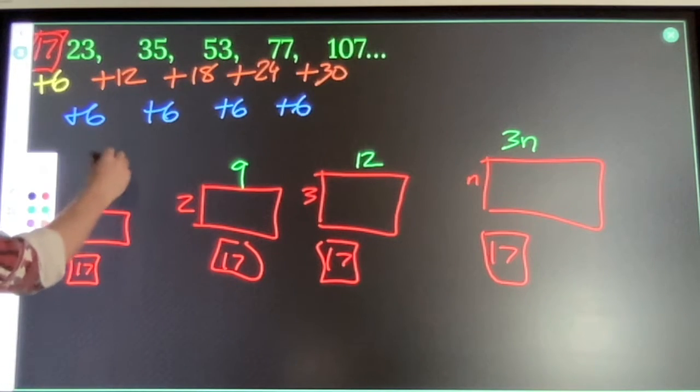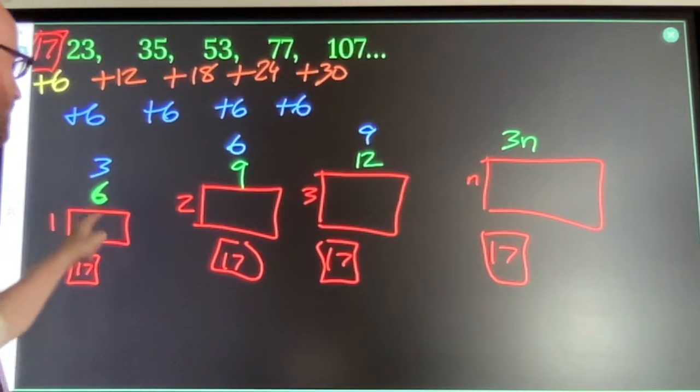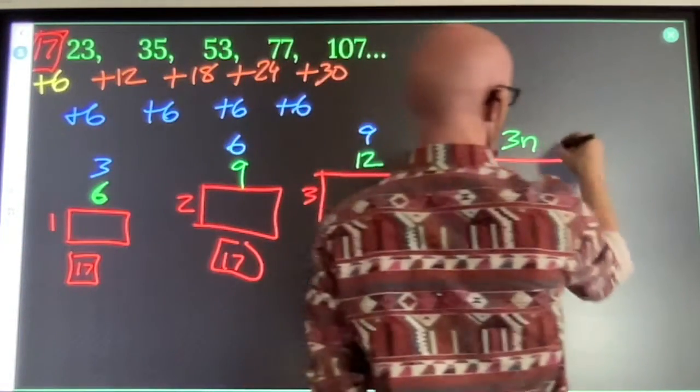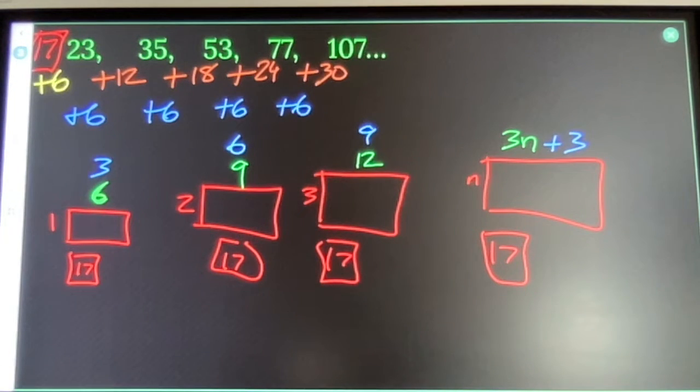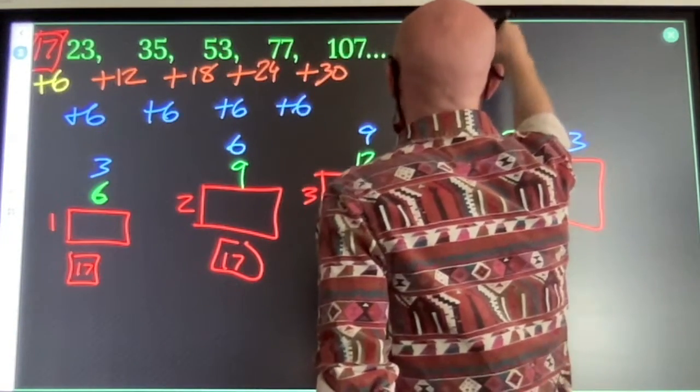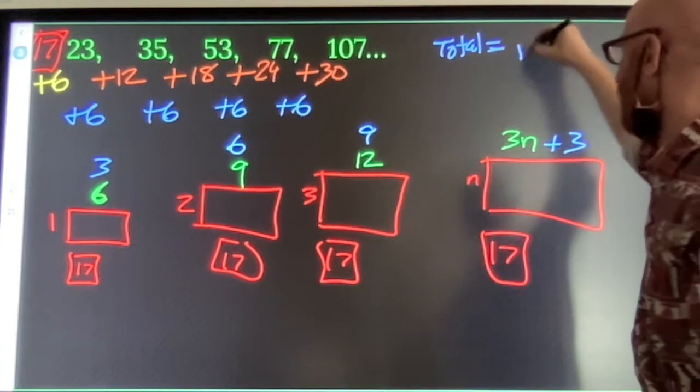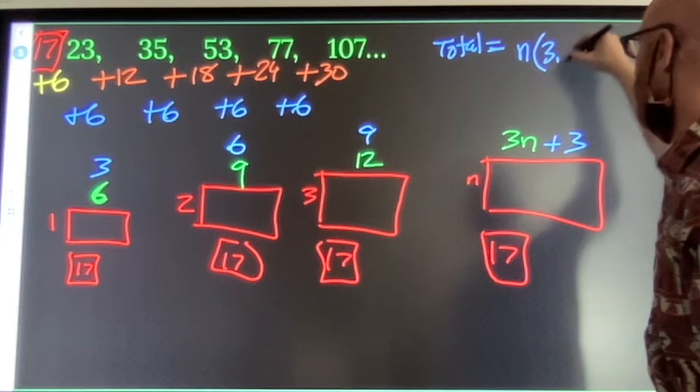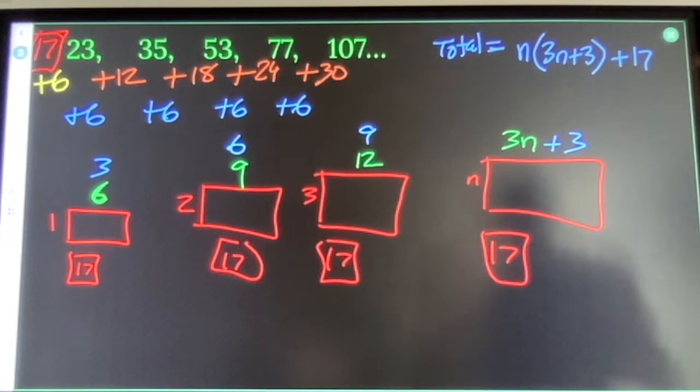That means the top of my rectangle is 3n with an adjustment. If I write out 3 times 1, 3 times 2, 3 times 3. We've got to shift up 3. 3 times n plus 3. Those are my formula blocks. Total number of squares in this set is going to be n times 3n plus 3 plus the 17 extras.